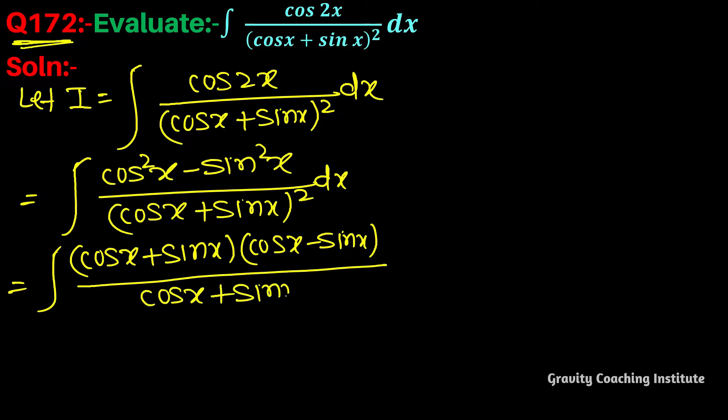So this becomes (cos x plus sin x) times (cos x minus sin x) upon (cos x plus sin x) squared. And this square will cancel, so this becomes cos x minus sin x upon cos x plus sin x.